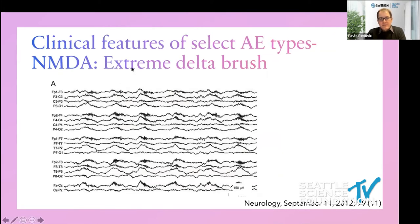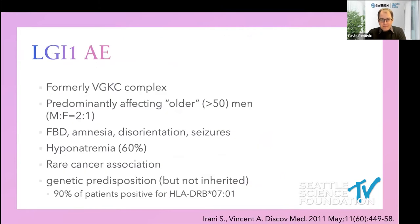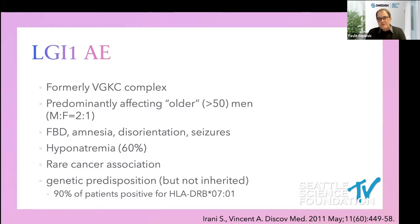Another feature that can be seen with NMDA receptor encephalitis is the extreme delta brush on EEG tracings. Another autoimmune encephalitis prototype worth highlighting is LGI1 — leucine-rich glioma inactivated. This molecule was previously considered to be voltage-gated potassium channel autoimmune encephalitis, but it was later found that the voltage-gated potassium channel binding was not always specific and comprised two entities: LGI1 and CASPR2, plus a number of non-pathological bindings.